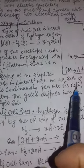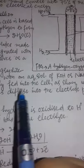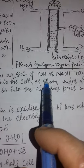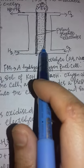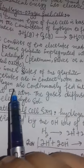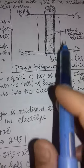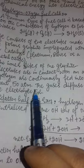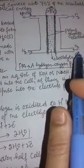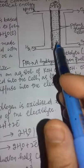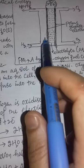The inner sides of the graphite electrodes are in contact with an aqueous solution of KOH or NaOH as the electrolyte. Oxygen and hydrogen are continuously fed into the cell under a pressure of about 50 atmospheres. At this pressure, the gas diffuses into the electrode pores, and so does the electrolyte solution, which comes from the electrode through the path to the electrolyte.